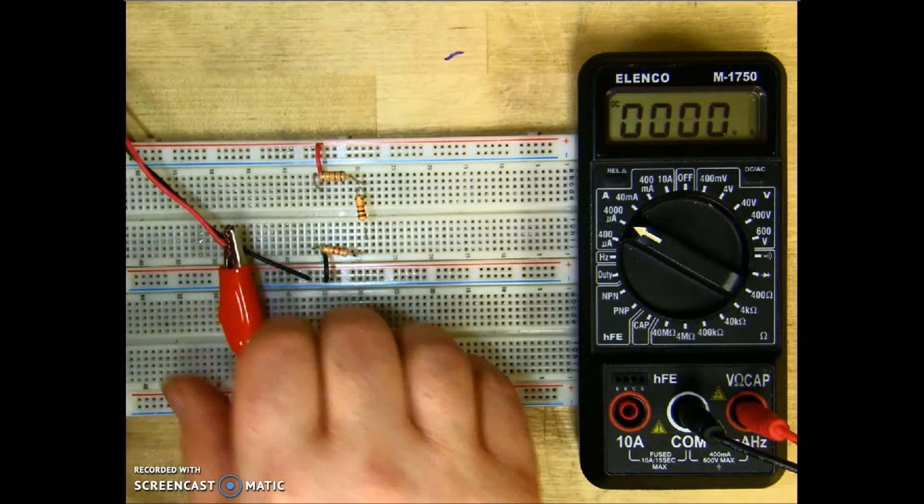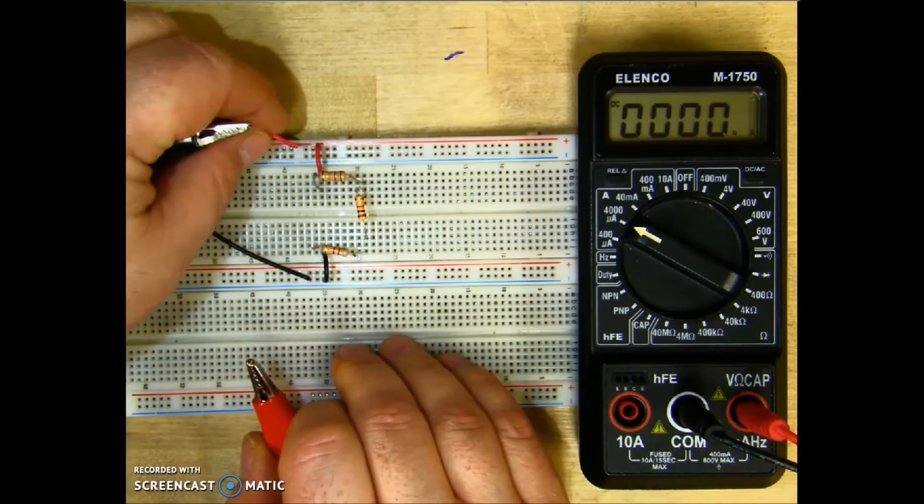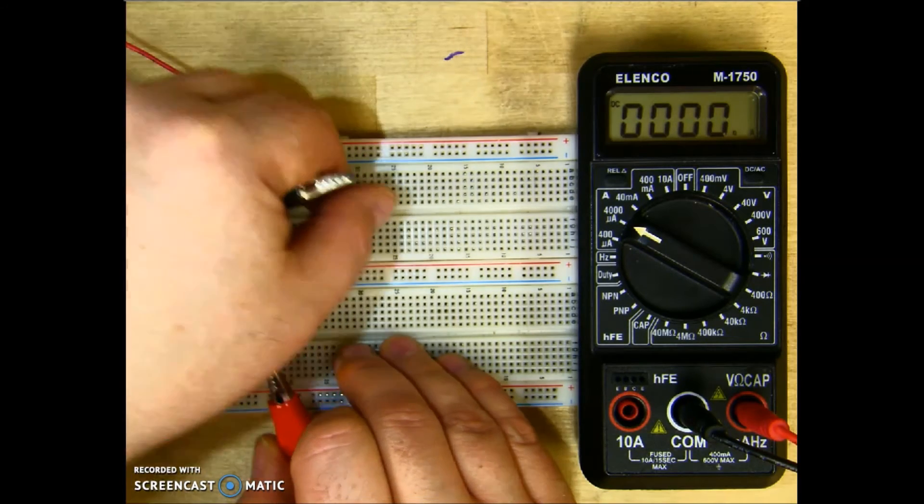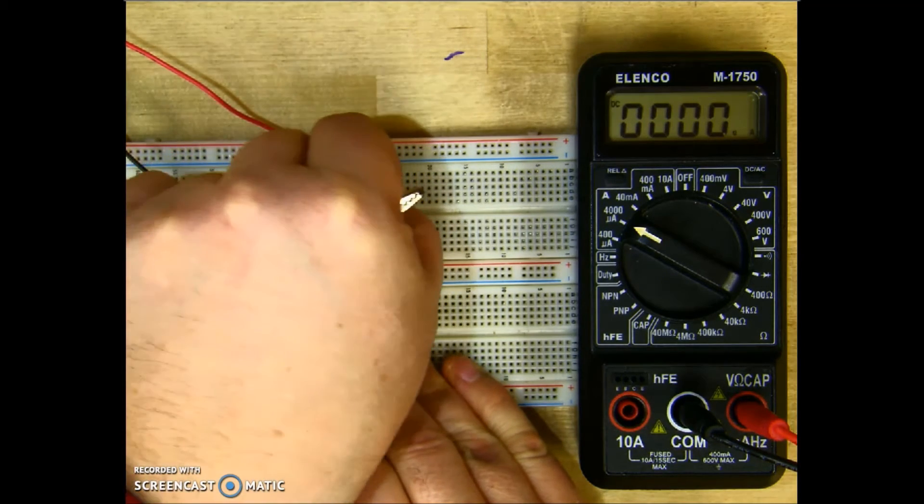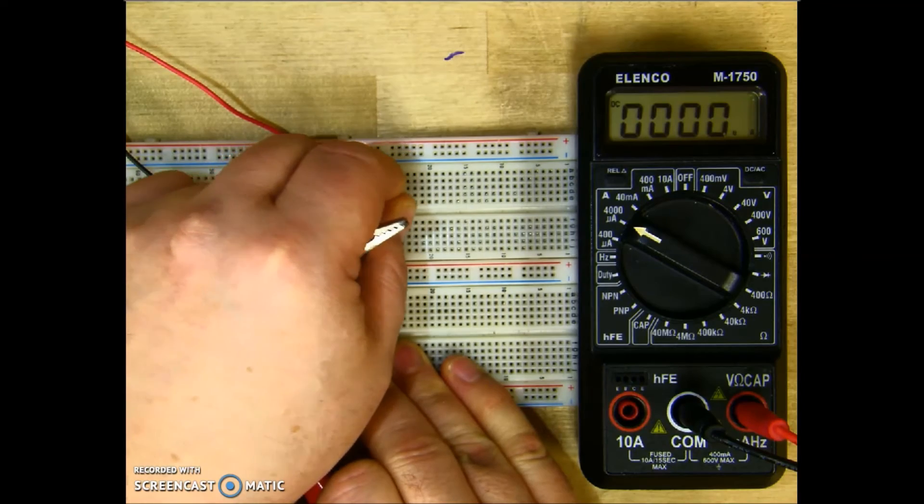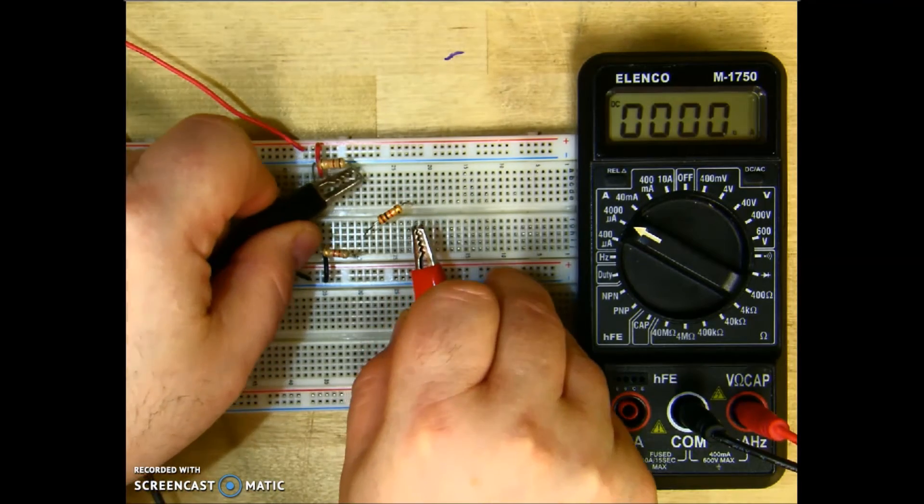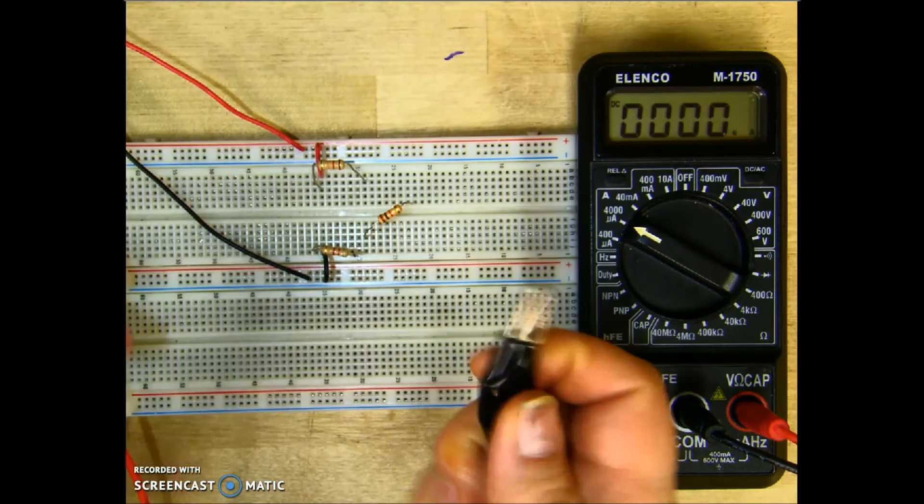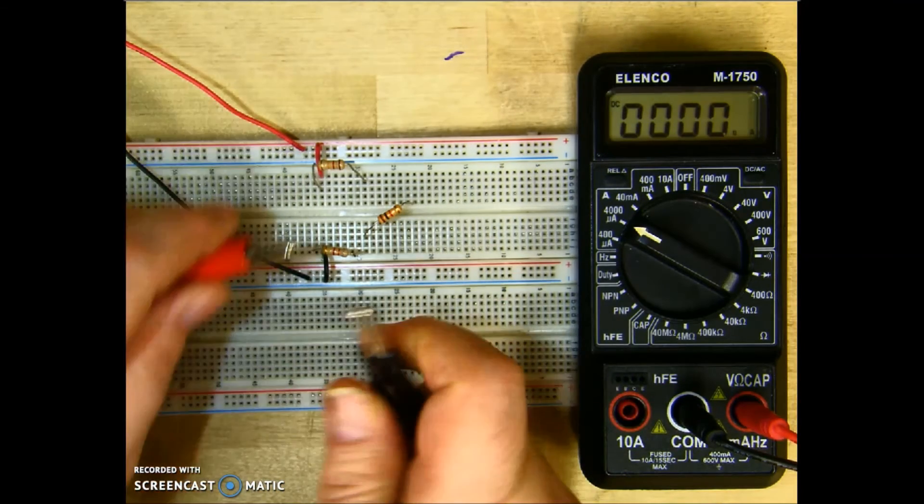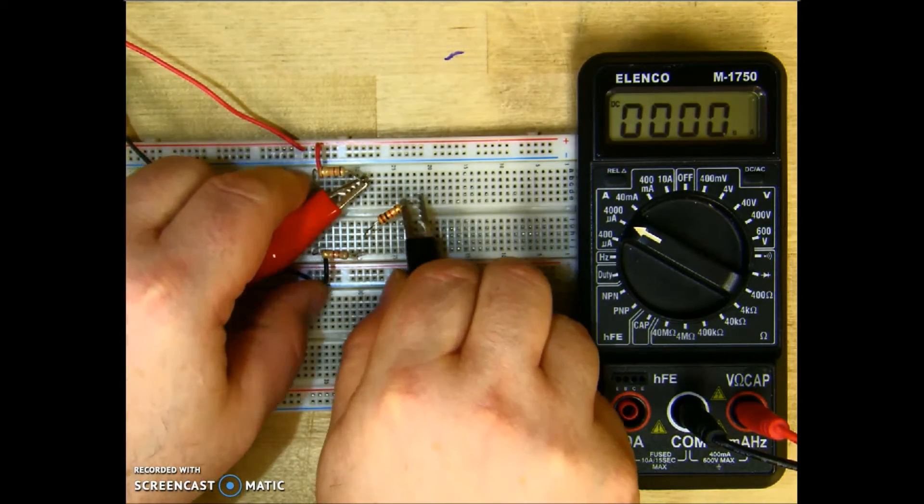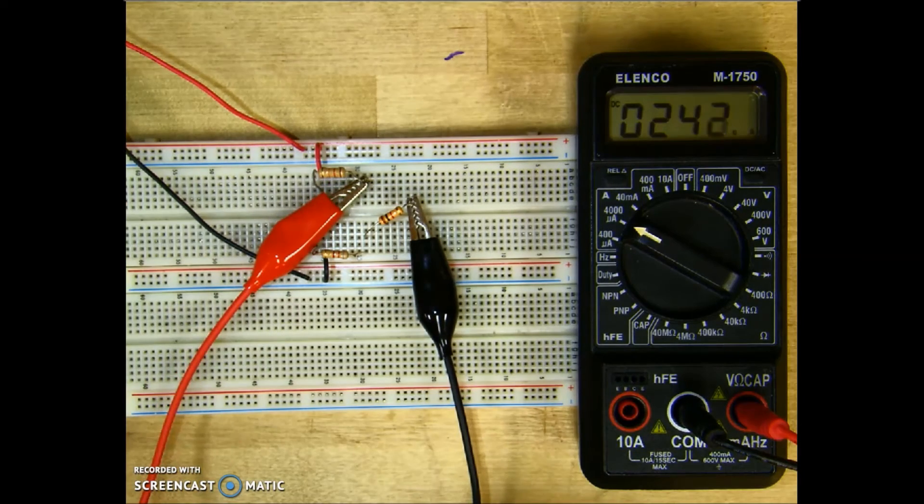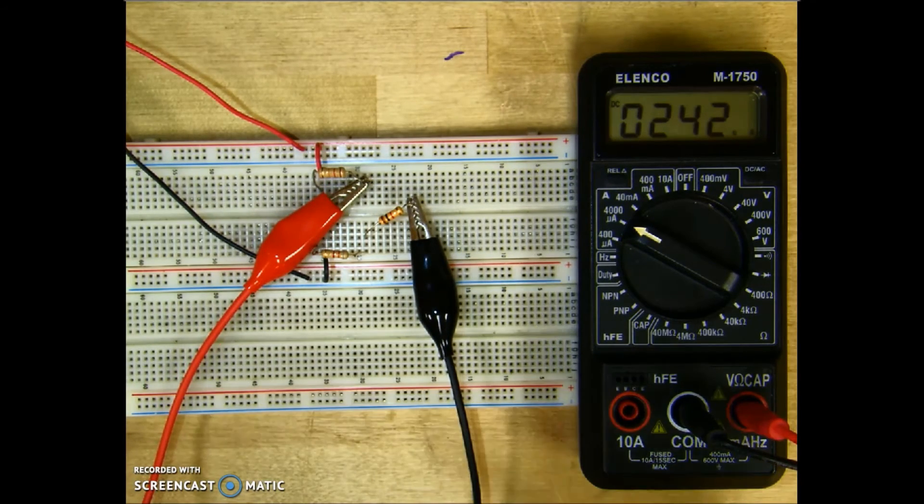So I'm going to go ahead and put this back in, and then I'm going to come over here in between R1 and R2. I'll break the circuit, and I'll go ahead and put my meter in. Now again, I should have the same 241 milliamps, and I do, 241, 242.